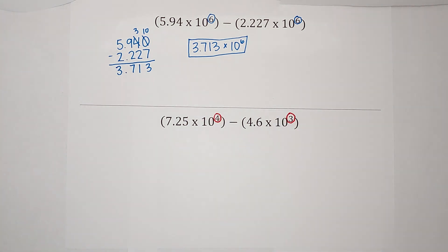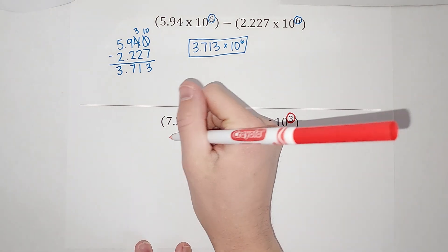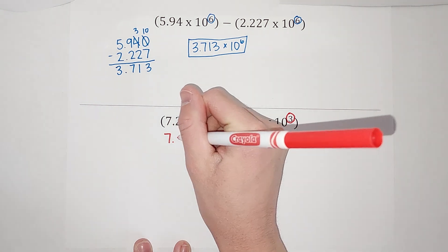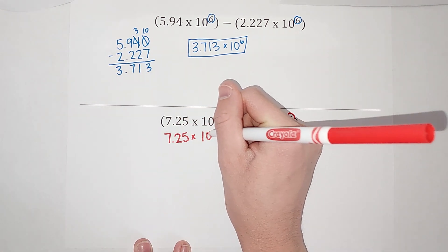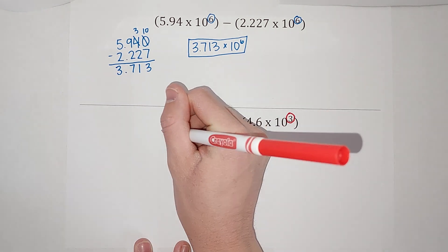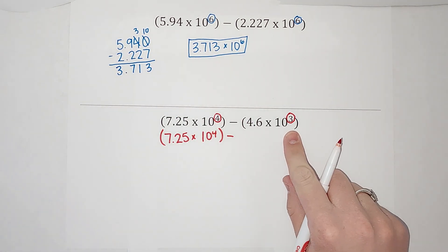So if we do that, this one is already 10 to the fourth, right? So this one we don't need to change. We are going to change this guy.